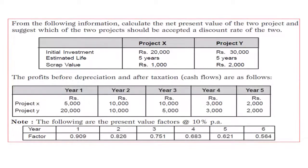We will take one illustration to understand how to solve the problems. From the following information, calculate the net present value of two projects and suggest which of the two projects should be accepted at a discount rate of 10%. We have project X and project Y, with initial investments of 20,000 and 30,000 respectively. Estimated life is five years each, and scrap values are 1,000 and 2,000.